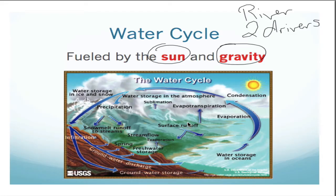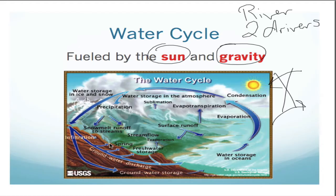Earth being a closed system means that matter cannot enter or leave the system. So we can't have water coming in, we can't have water coming out. All of the water that we see here is staying here. All it's going to do is jump around from sphere to sphere, interact a little bit with the things inside of those spheres — and that's kind of what the water cycle is. It's important for us to understand the processes that happen within the water cycle, like evaporation and like precipitation.